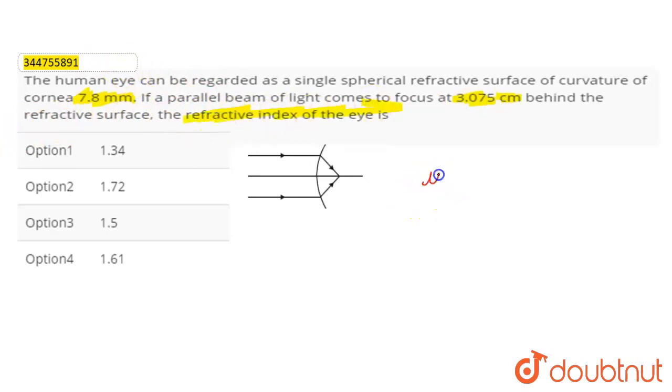So we have to find mu. The parallel beam of light is shown here, and the refractive surface has a curvature of 7.8 mm, so r is 7.8 mm.